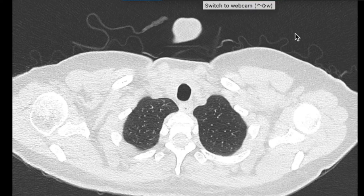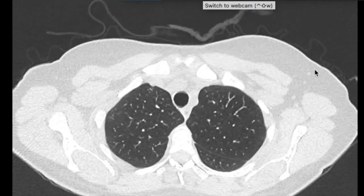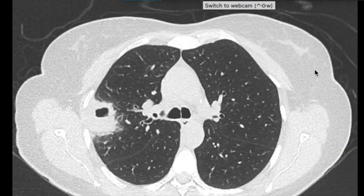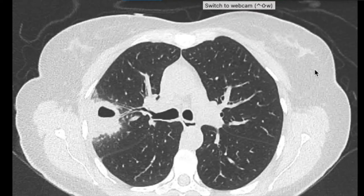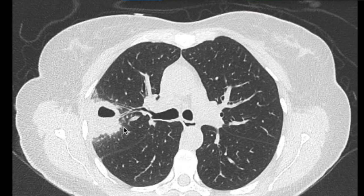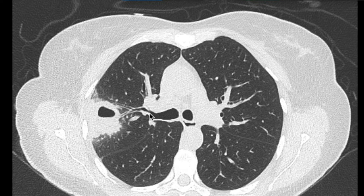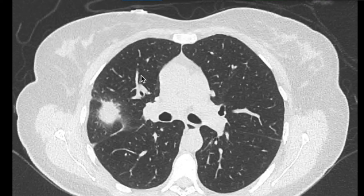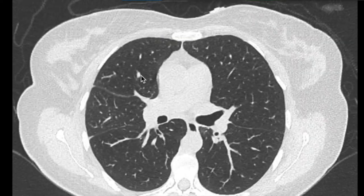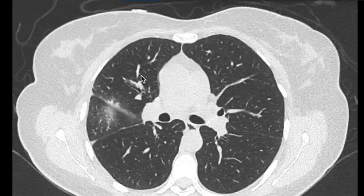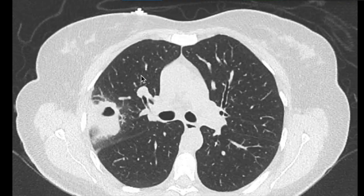I'll scroll through the CT for you now. These are the axial views and here's the cavity situated here. You can see that it's quite a thick-walled cavity. It may have an air-fluid level. There's a little bit of nodular change, possibly some ground glass surrounding it. It's situated in the right upper lobe, maybe crossing slightly into the right middle lobe.